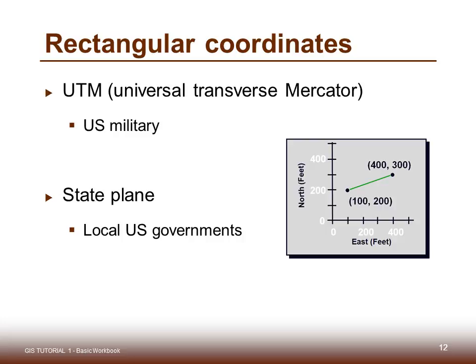Another option is rectangular coordinate systems — the Universal Transverse Mercator or UTM system used by the U.S. military, the USGS, and many other international systems. And state plane, which is a common use for local U.S. government. Much of the data you've been working with in this class has actually been in state plane coordinate systems.